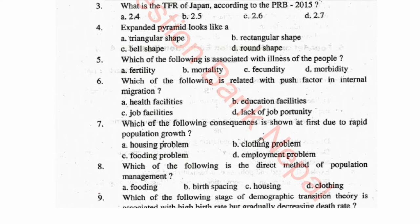Answer: morbidity. Question 6: Which of the following is related with push factor in internal migration? Options: (a) health facilities, (b) education facilities, (c) job facilities, (d) lack of job opportunity. Answer: lack of job opportunity.